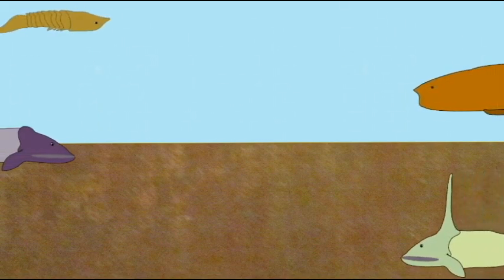Jawless fish were the only fish in the ocean for tens of millions of years, and they diversified into a large number of forms.